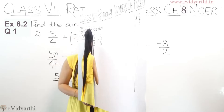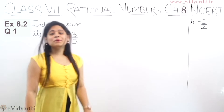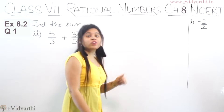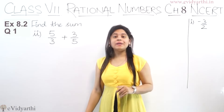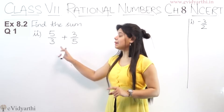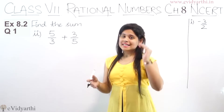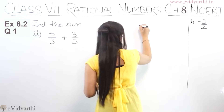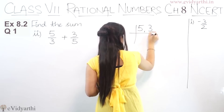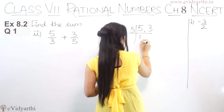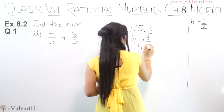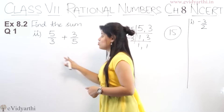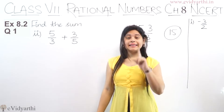Now let's come to the second part. The second part has 5 upon 3 plus 3 upon 5. You can see the denominators are not the same, so we need to make both denominators the same before we can add. We'll take the LCM of 5 and 3. Starting with 5 we get 1 and 3, then 3 gives 1 and 1. So 5 into 3 is 15 — we need to make the denominator 15.